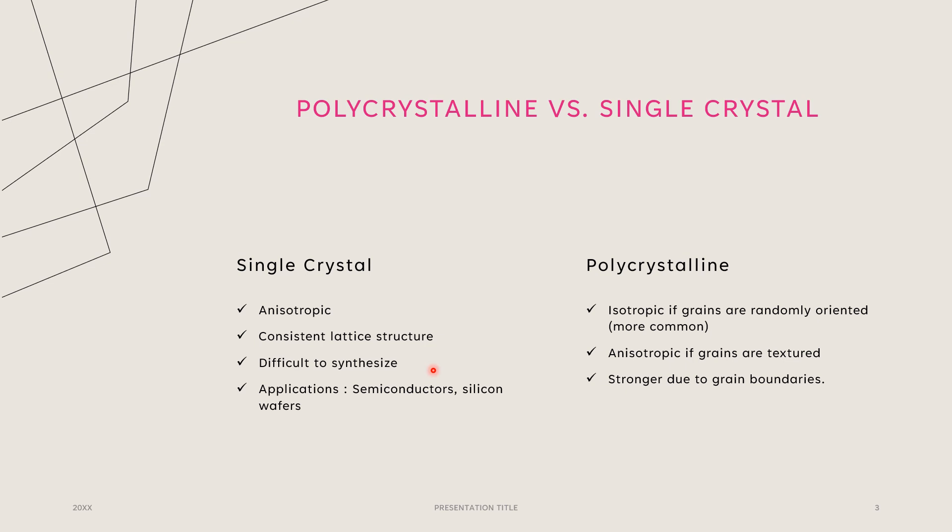A couple of applications of monocrystalline materials are semiconductors and silicon wafers. Silicon wafers are a material used for producing semiconductors, so those go hand in hand.